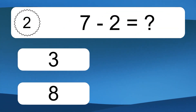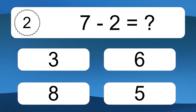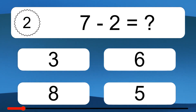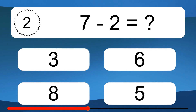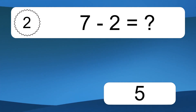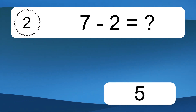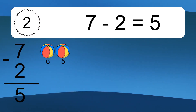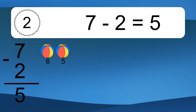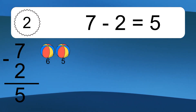7 minus 2 equals what? 7 minus 2 equals 5. Let's count it: 6, 5.